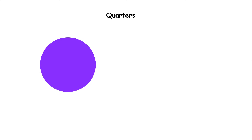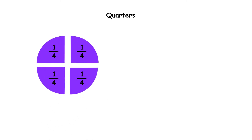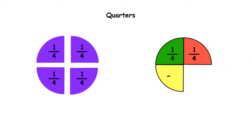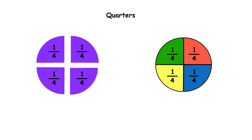If we cut this circle into four equal pieces, we have cut it into quarters. If we want to make a whole circle, we need four quarters. Four quarters make one.